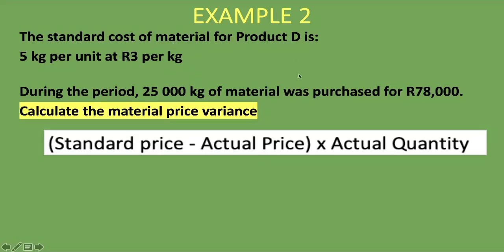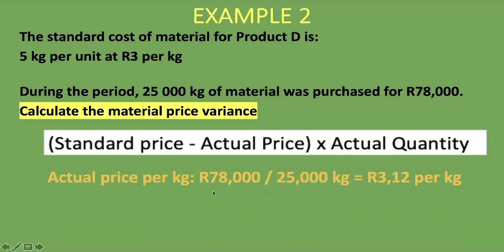We are not given the actual price per unit directly, but we are given the total amount paid. We bought 25,000 kg and paid 78,000 rand for that. To get the actual price per kg, we take the 78,000 rand — the total amount paid — and divide it by the number of kilograms purchased, which is 25,000 kg.